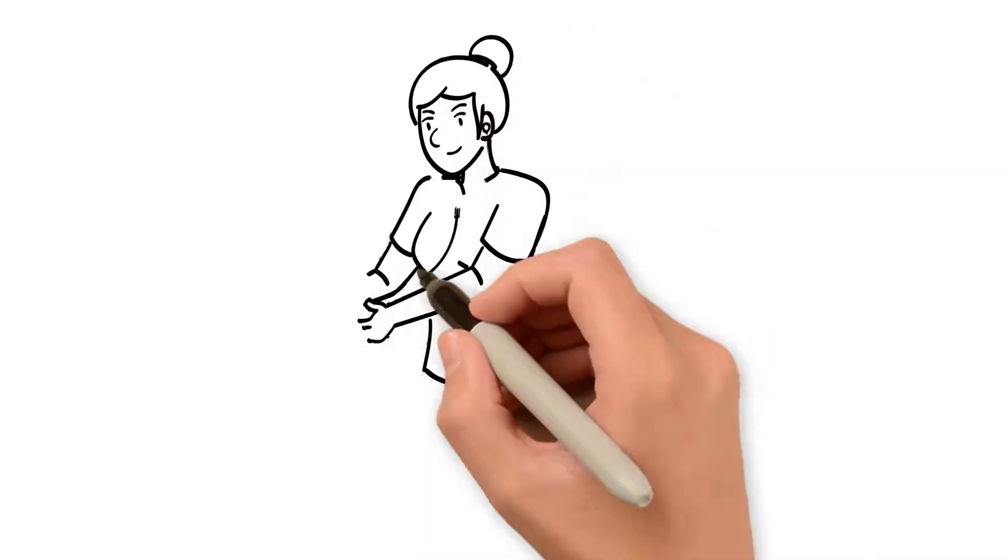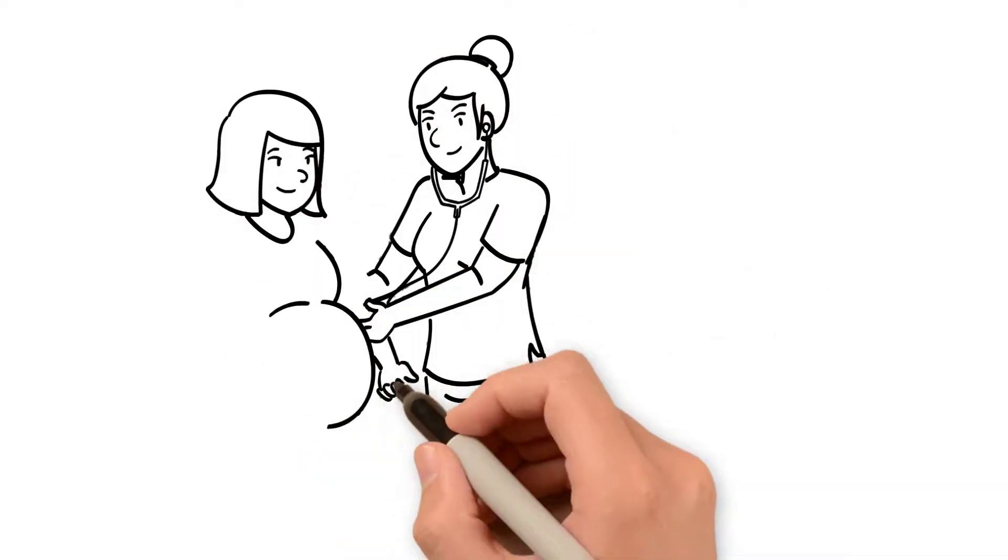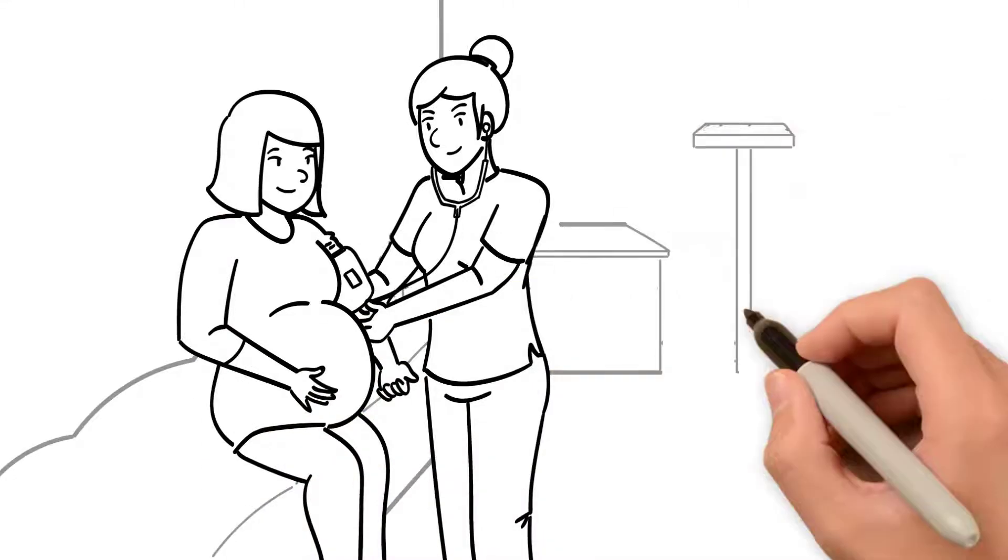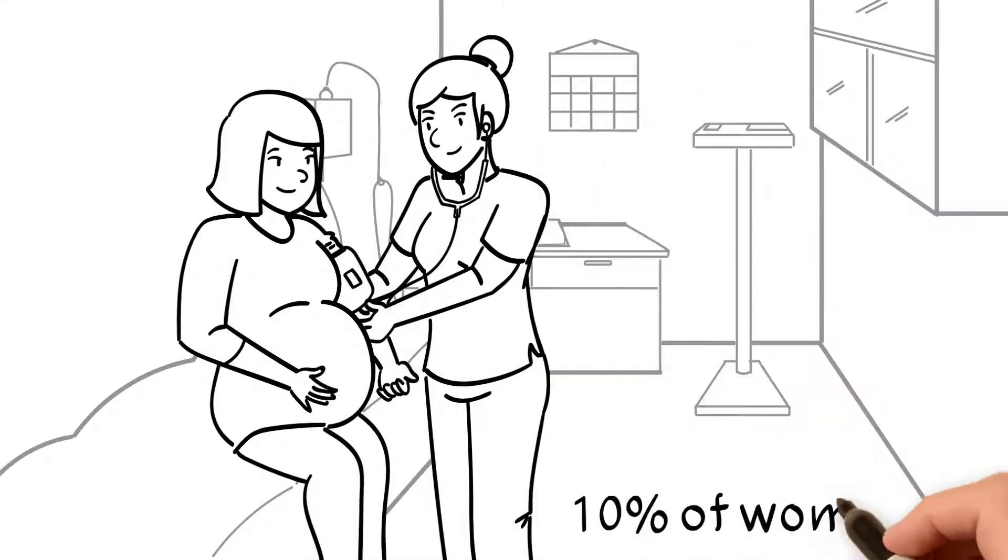The development of high blood pressure during pregnancy, also known as gestational hypertension or preeclampsia, affects up to 10% of women.